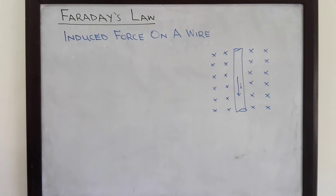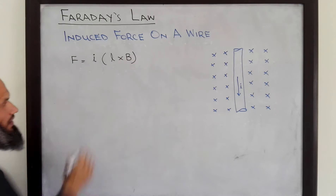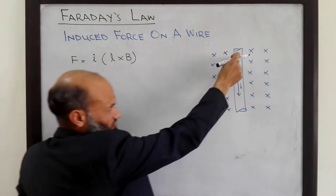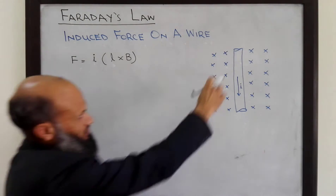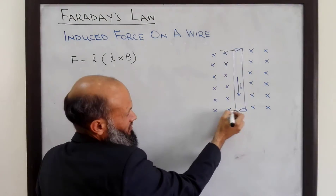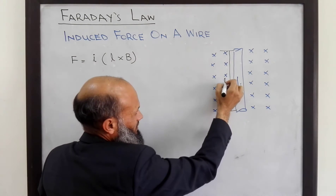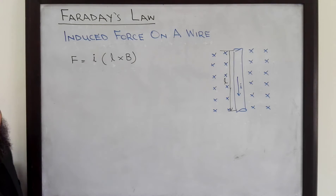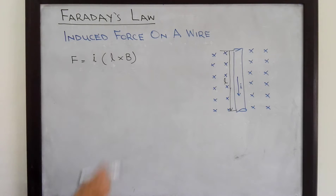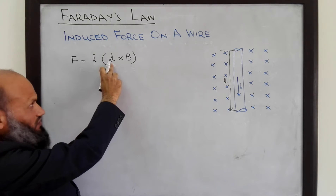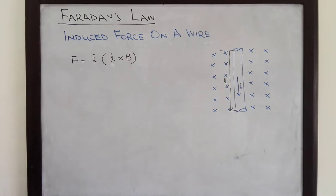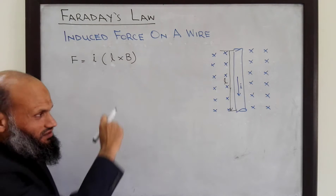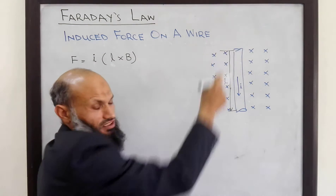If this current-carrying conductor is placed in this magnetic field, it will experience a force, and that force is given by I L cross B. Where I is the current flowing in the conductor, L is the length vector whose magnitude equals the effective length of the conductor and whose direction is the same as the direction of current. B is the flux density vector, and in this particular case its direction is into the surface of the board.